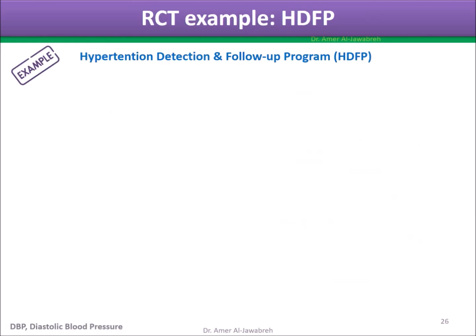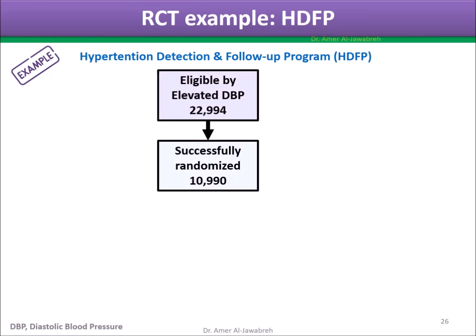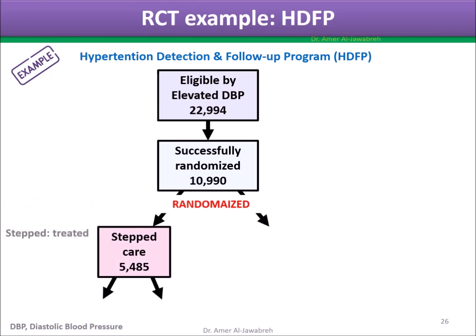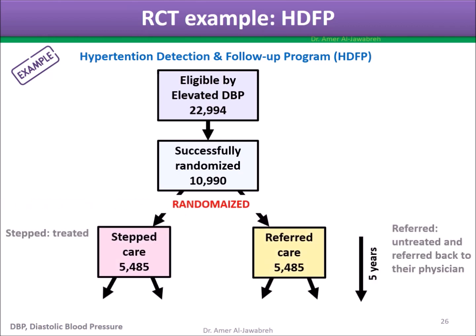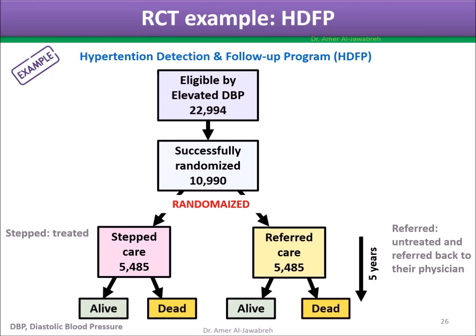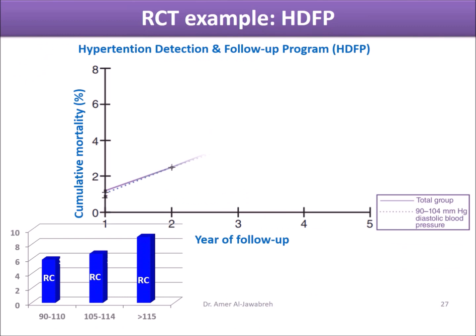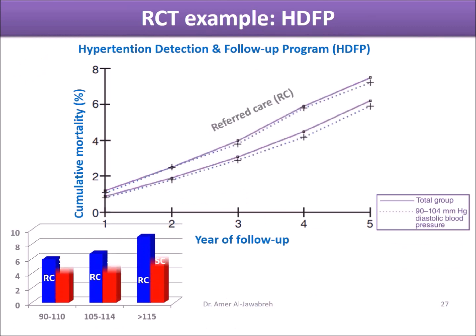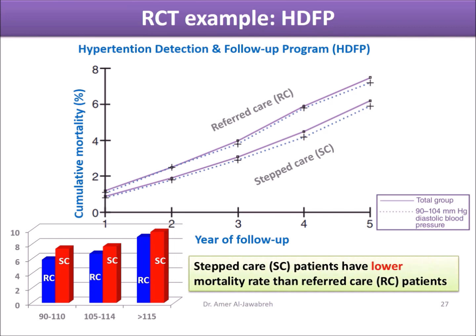RCT example — HDFP (Hypertension Detection and Follow-up Program): eligible hypertensive patients were successfully randomized, with 50% treated and 50% referred, then followed for 5 years for outcomes of dead or alive. The graph showed that stepped-care patients had a lower mortality rate than referred-care patients.